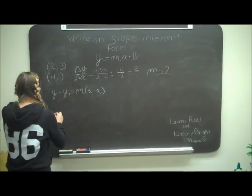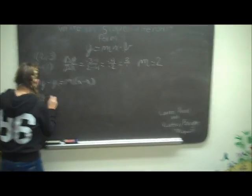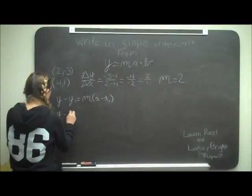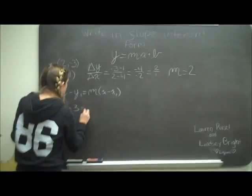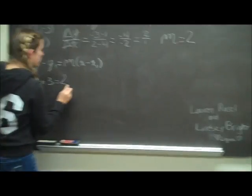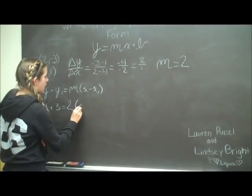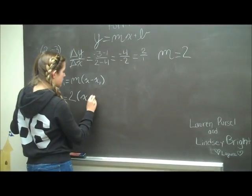Then you fill it in. So y minus negative 3, which becomes y plus 3, equals the slope 2 times (x minus 2).